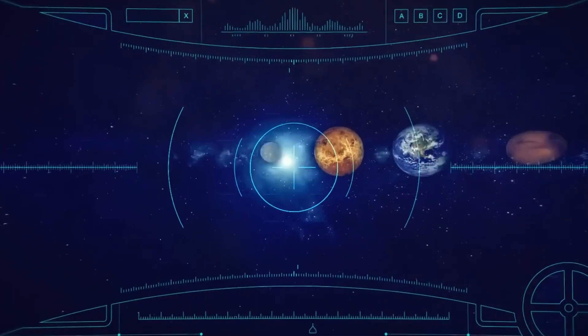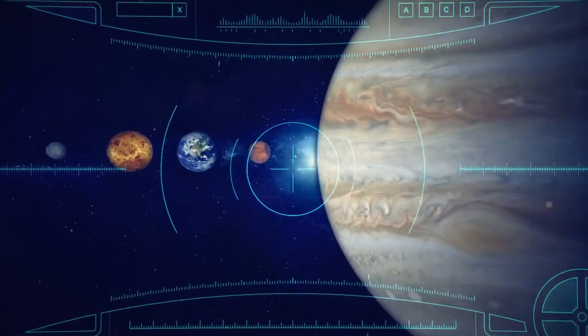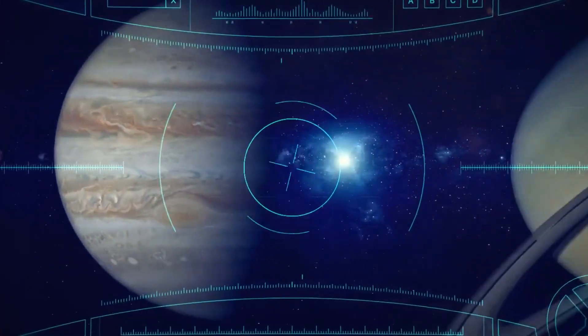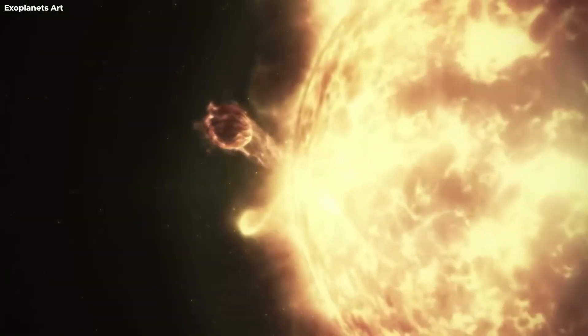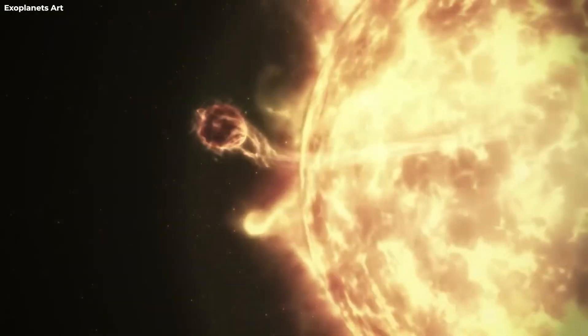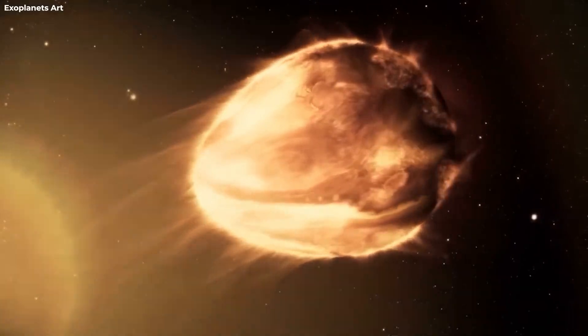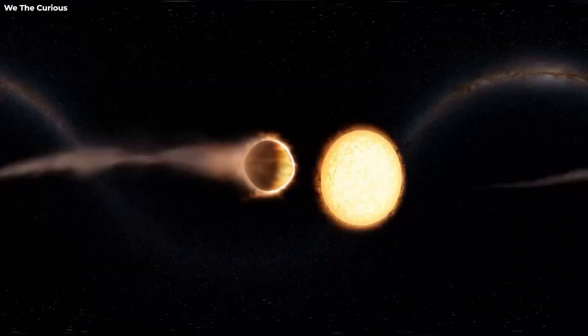Venturing even farther, we arrive at Trappist-1d, a potentially habitable exoplanet, 39 light years from Earth. Orbiting a white dwarf, it offers favorable conditions for a human colony, though the journey would require 677,000 years using traditional rockets.